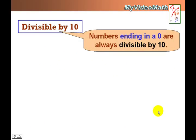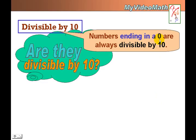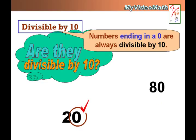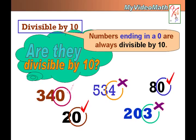Divisible by 10 is the easiest. Just check the ending digit. If it's a 0, then it's divisible by 10. Looking at these numbers — yes, yes, no, no, and yes.